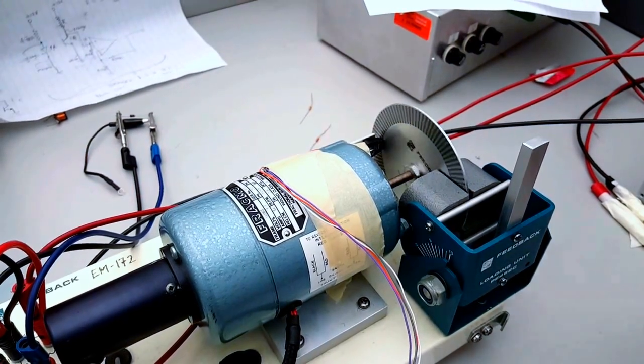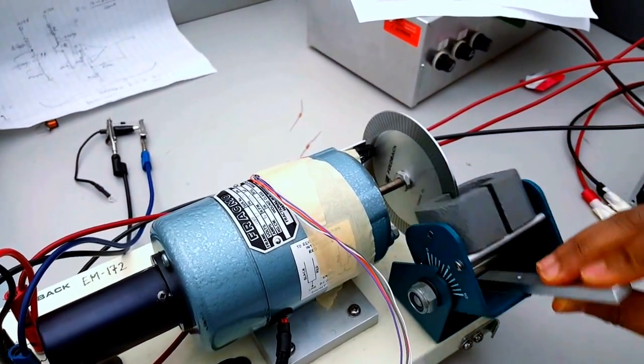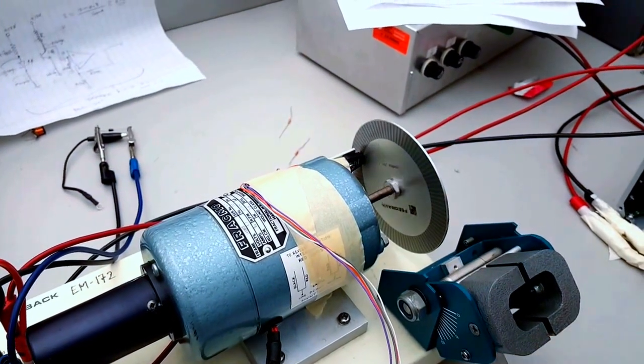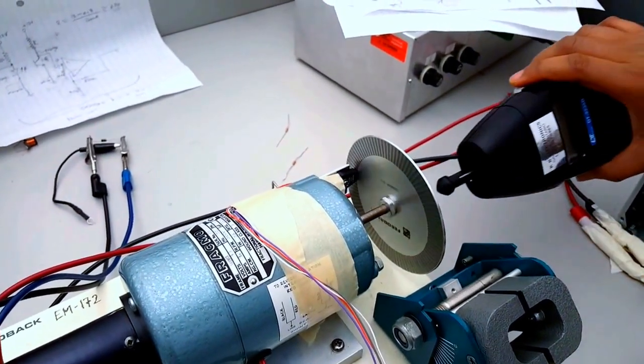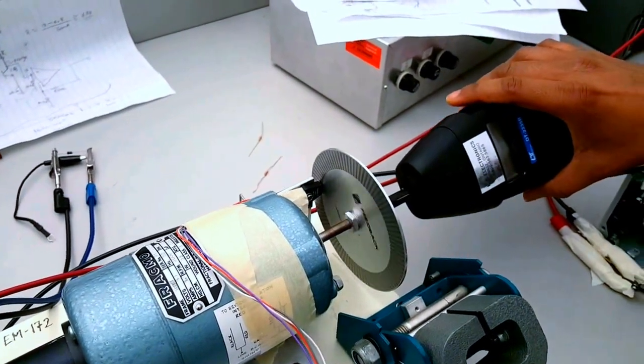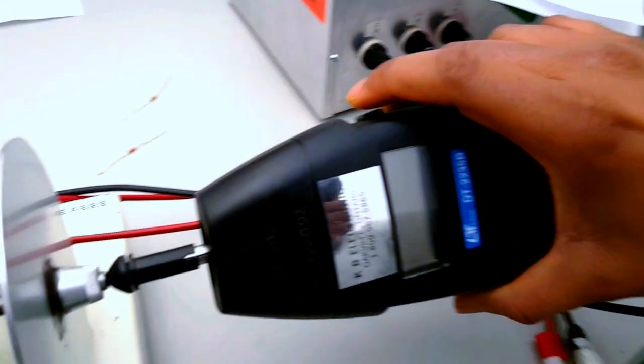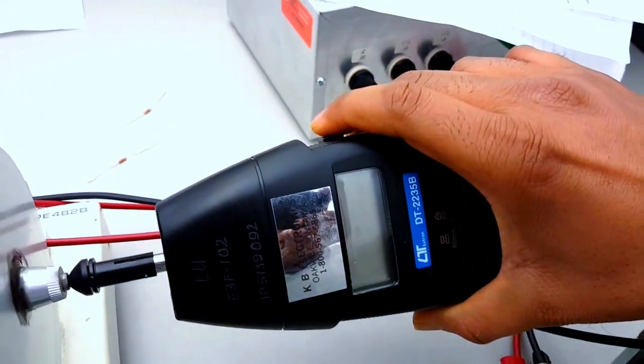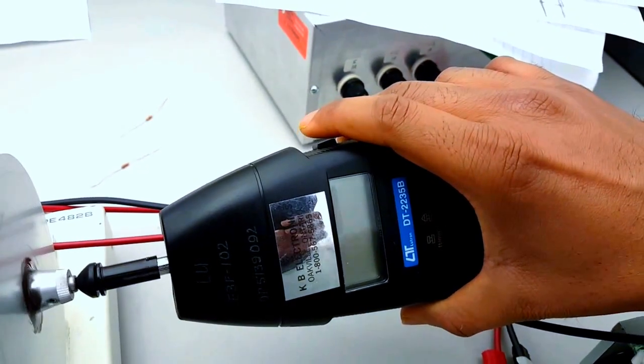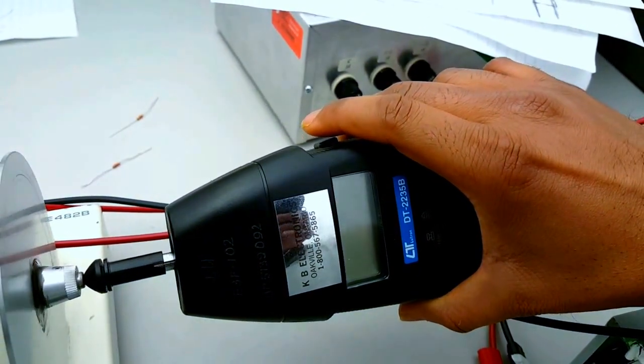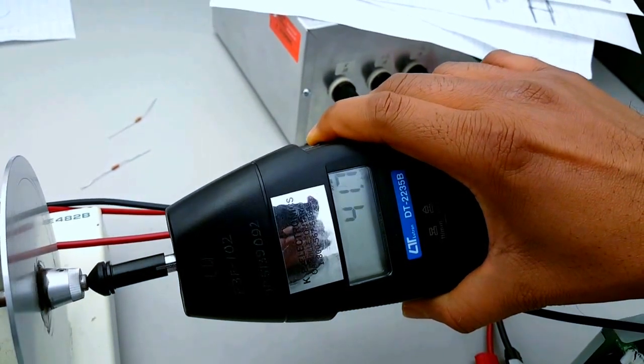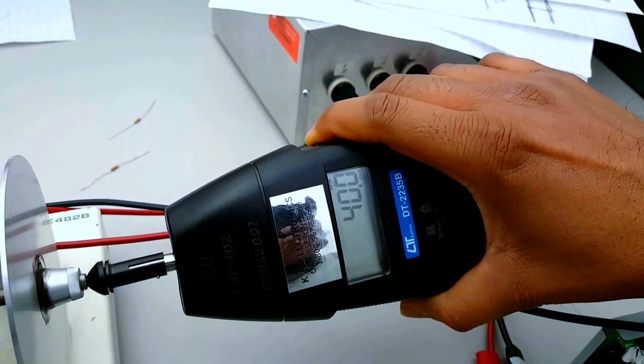We can do the measurement. We have here a tachometer that will measure our speed. The required speed that we need to maintain is 40 rpm. Let's measure it. As you can see, it's very close.